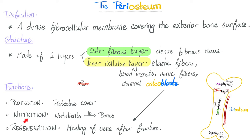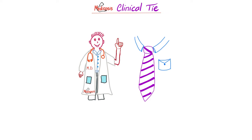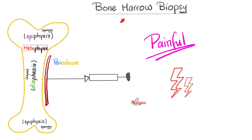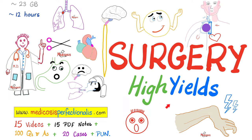Functions of the periosteum include protection, nutrition, regeneration, and providing a surface for attachment of muscles and ligaments. For a clinical tie: why is bone marrow aspiration or bone marrow biopsy very painful? Because before reaching the bone, you must pass through the periosteum, which has an enormous number of somatic sensory nerve endings that are very sensitive to pain.